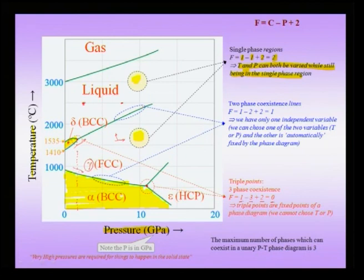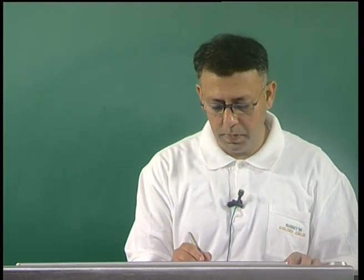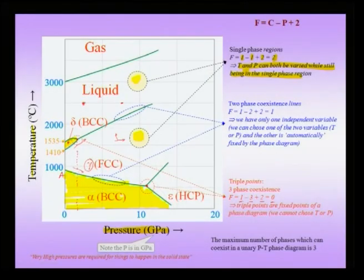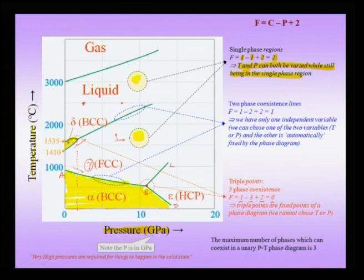Now, looking at the coexistence lines between two phases: along line A–B, it is the coexistence between alpha and gamma phases. Along the B–D curve, the alpha and epsilon (HCP) forms of iron coexist. Along the B–C line, it is FCC and HCP coexistence. Similarly, along the F–H part of the curve, the liquid and FCC forms of iron coexist.